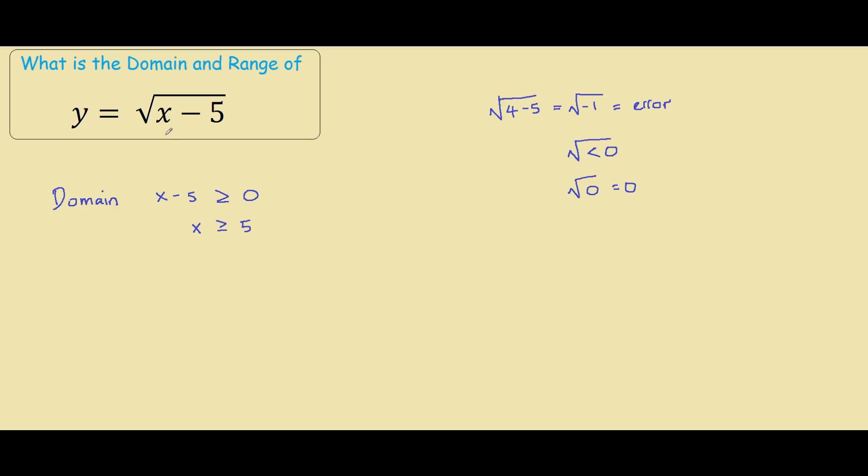If we look at the equation again, plugging in 5 gives us 5 minus 5, which is the square root of 0, so it works. But if we try 4, it doesn't work anymore. If we try 6, we get 6 minus 5, which is the square root of 1, and it still works. That is why our domain says x must be greater than or equal to 5.